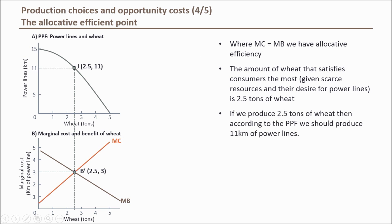But what if our economy is not producing at point J? Let's assume the economy is producing 1 tonne of wheat and 14 kilometres of power lines — this is point B on the PPF. At this production efficient combination, we know that the marginal benefit of producing an extra tonne of wheat is greater than the marginal cost to produce it, so marginal cost is less than marginal benefit.